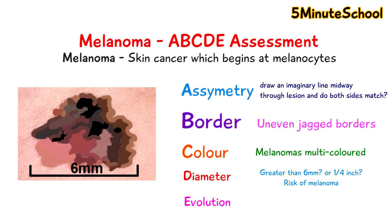E is for evolving, and this is to note any changes in the lesion over a period of time. It's important to know any changes in size, shape, colour, or if it elevates on your skin slightly — so if it's raised. Also keep a note of any symptoms, so if it starts to burn, itch, bleed, or if it begins to crust.